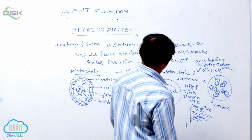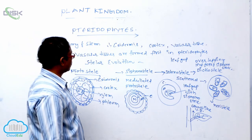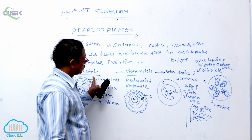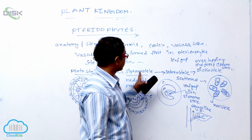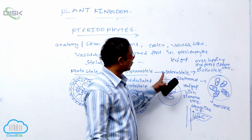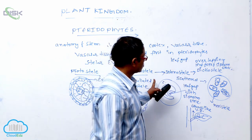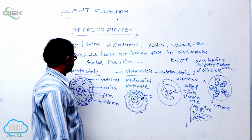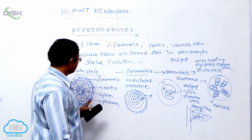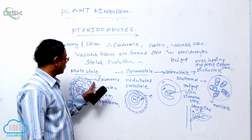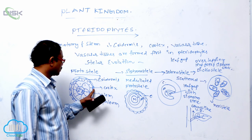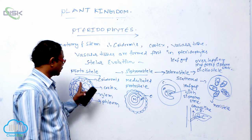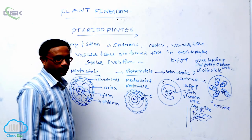So these are the stele evolution stages. First, what is the first stele? Protostele. After the evolutionary stage, siphonostele forms. After siphonostele, it is converted into the solenostele. After solenostele, it is converted into the dictyostele. This is the sequence. Protostele means outside is the epidermis, below that is the cortex, and phloem is surrounded by the xylem at the center — that is known as the first-formed stele, the protostele.